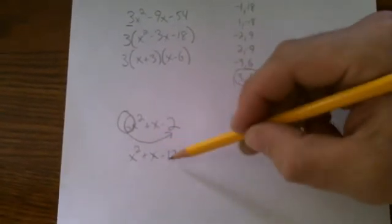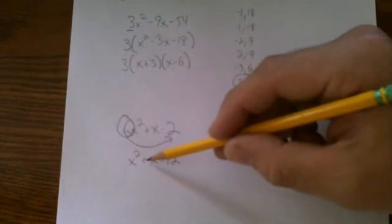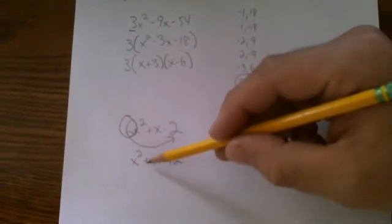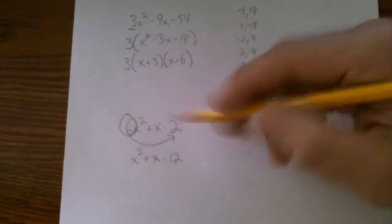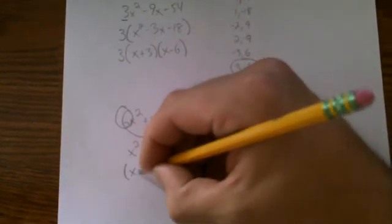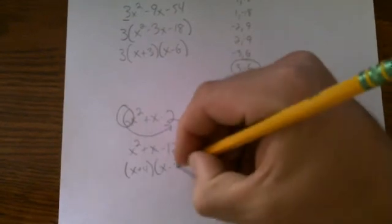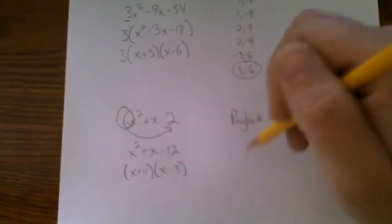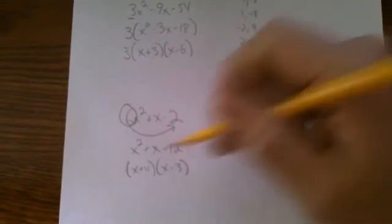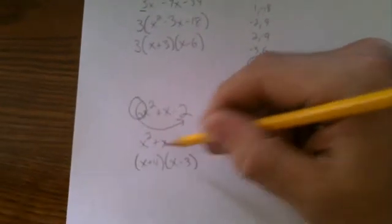The factors of negative 12 that are 1 apart that add to a positive 1 are positive 4 and negative 3. So those are my factors: x plus 4 and x minus 3. If you needed to list every factor of negative 12 that's fine. But you'd end up with positive 4 and negative 3 are the ones that add to positive 1.